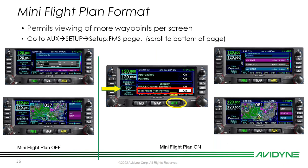Another great feature for the IFD 440 is the mini flight plan format. It allows you to shrink down the waypoint display — showing just bearing, distance, and time — so you can see more waypoints at once. This is especially useful with the smaller 440 screen compared to the IFD 5 series. You can toggle mini flight plan on or off to switch between the compact and full information views.